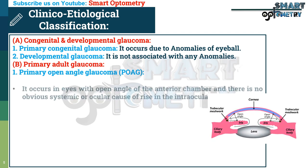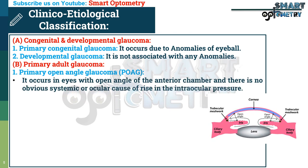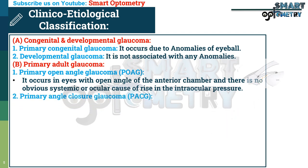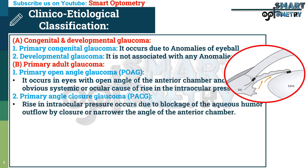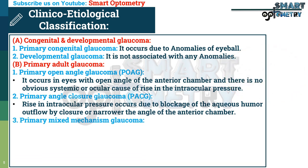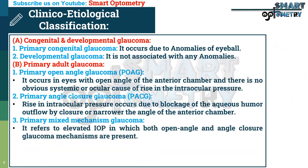B. Primary adult glaucoma. 1. Primary open angle glaucoma (POAG) — occurs in eyes with an open angle of the anterior chamber and there is no obvious systemic or ocular disease causing rise in intraocular pressure. 2. Primary angle closure glaucoma (PACG) — rise in intraocular pressure occurs due to blockage of aqueous humor outflow by closure or narrowing of the angle of the anterior chamber. 3. Primary mixed mechanism glaucoma — refers to elevated IOP in which both open angle and angle closure glaucoma mechanisms are present.